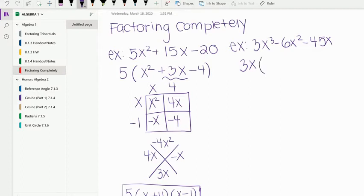So to come up what's left, we'd say 3x times what will give us x cubed? That would be x squared. 3x times what would give us negative 6x squared? That would be negative 2x. And 3x times what would give us negative 45x? That would be negative 15.